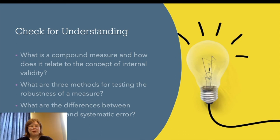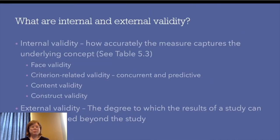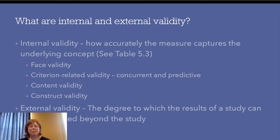Now we're going to talk about validity. Validity is the question of whether we're measuring what we intend to measure. If reliability is whether our measures are predictable, validity is whether our measures are correct. When we talk about internal validity, we're talking about how accurately a given measure captures an underlying concept. See Table 5.3 for different types of validity. We're going to talk about face validity, criterion-related validity including concurrent and predictive validity, content validity, and construct validity. External validity — the degree to which results can be generalized beyond the study — is something we'll cover later in the semester.